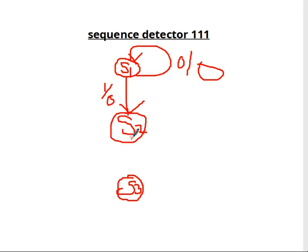So next, when you are in S2, suppose here you get one, you have to go to obviously the next state. That means you get one, output is still zero. You have to go to S3.